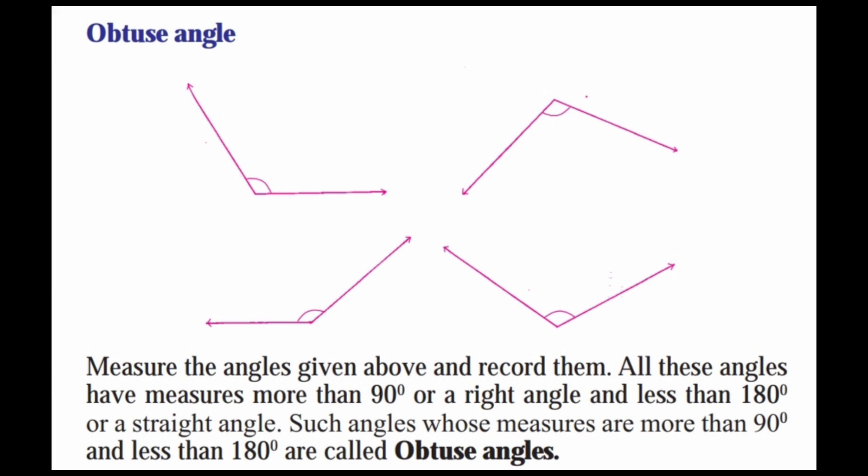Next is obtuse angle: measure the angles given above and record them. All these angles have a measure more than 90 degrees and less than 180 degrees. Such angles are called obtuse angles. So, less than 90 degrees is acute angle, and more than 90 degrees and less than 180 degrees is obtuse angle.